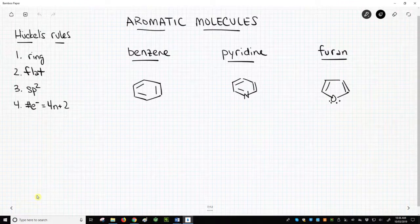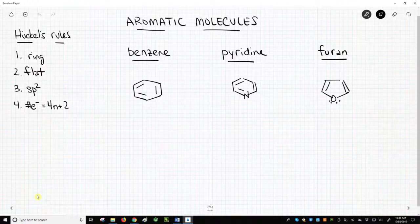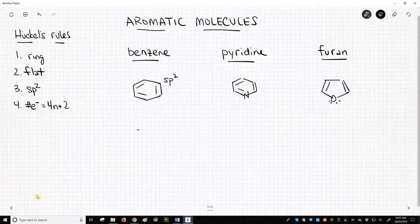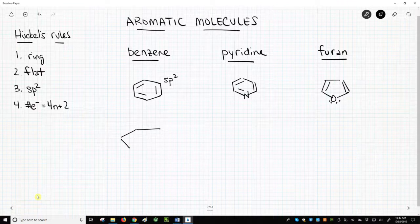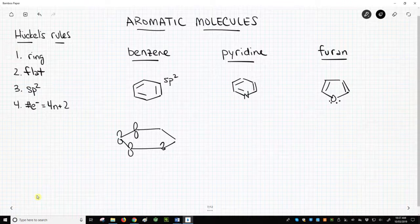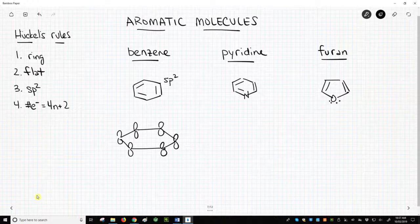Example 1. Benzene. Benzene has a ring. Benzene is indeed flat. All the atoms in the ring are sp2 hybridized, so they all have an unhybridized p orbital. We can draw the benzene ring flat with some perspective and draw the p orbitals perpendicular to the plane of the molecule.